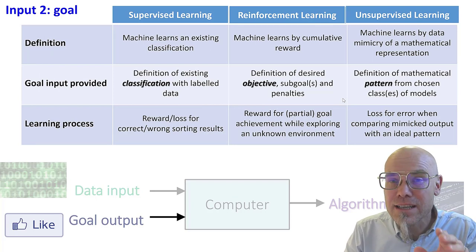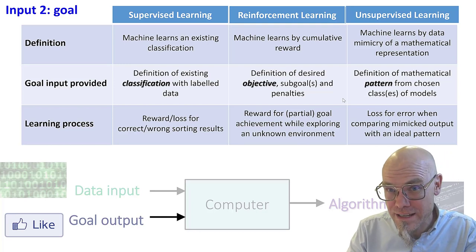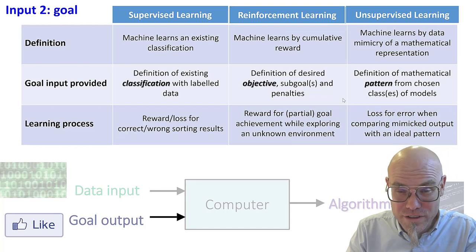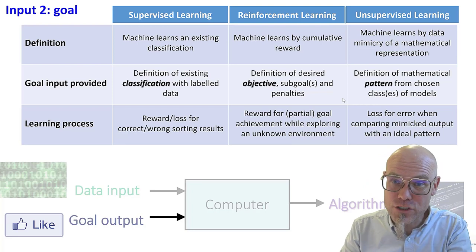So basically in supervised learning, the machine learns an existing classification, something that we know, and we want to automate difference between cars and motorcycles. And we just, the machine learns to put things into buckets under our supervision.